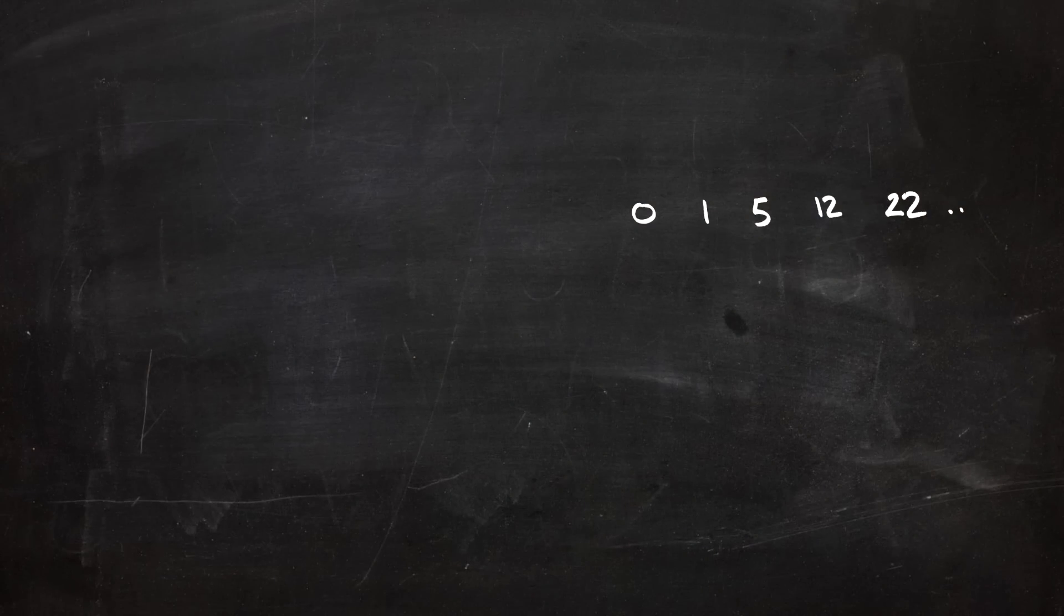So here is that sequence again, and we'll calculate the difference between two adjacent numbers. Looking at the first pair, we'll get one minus zero, which is one, and for the second pair we'll get five minus one, which is four, and so on. So you get a sequence of the differences.